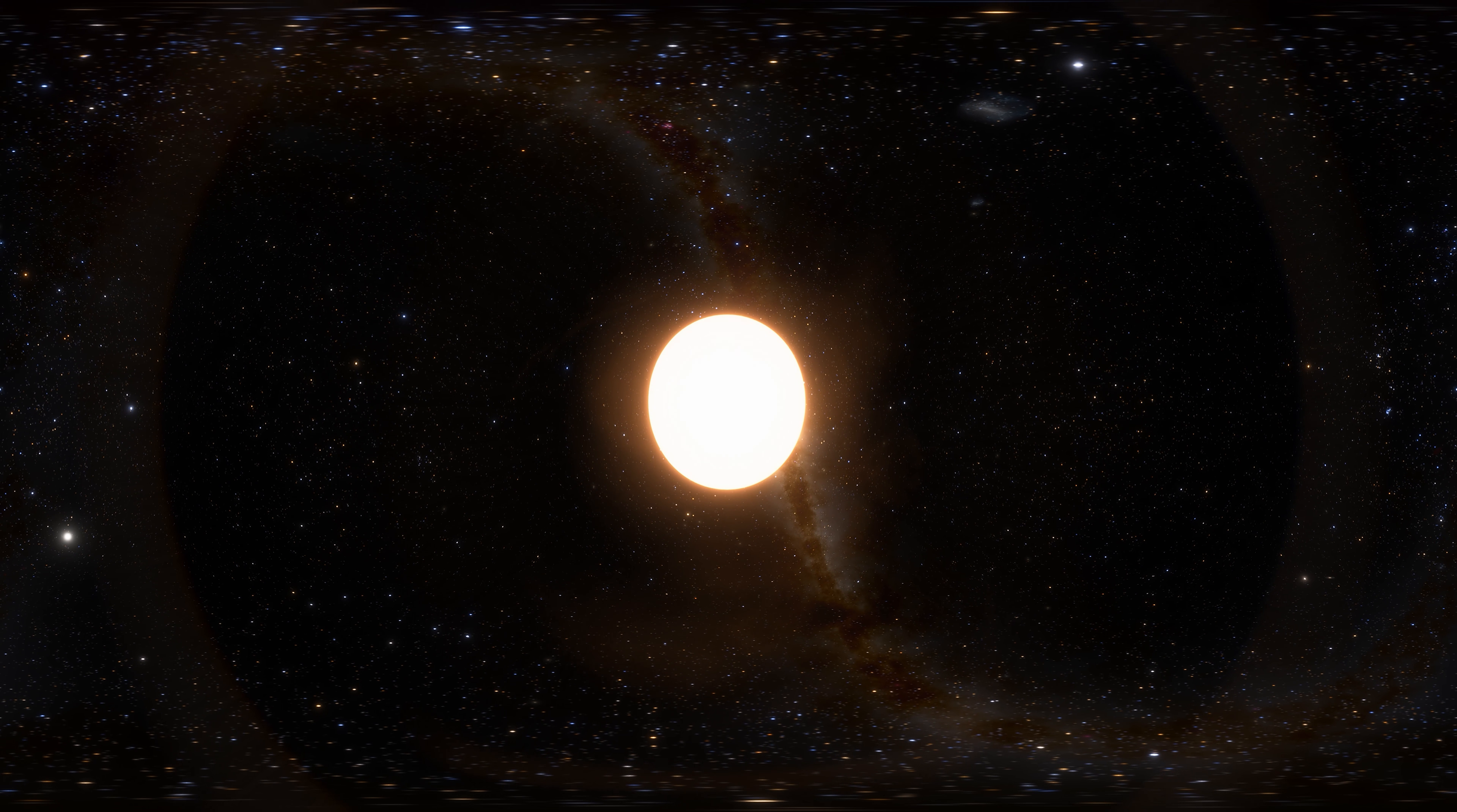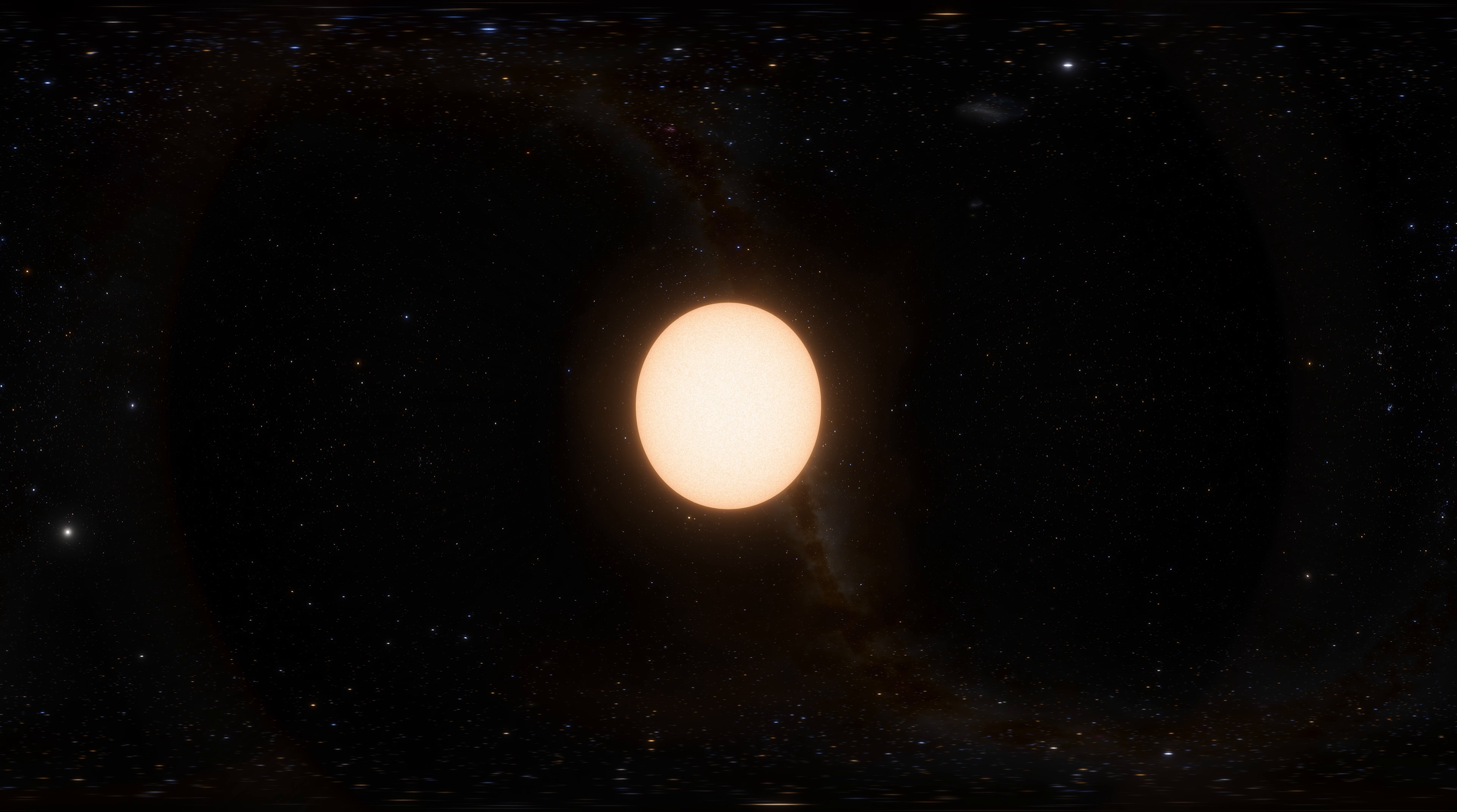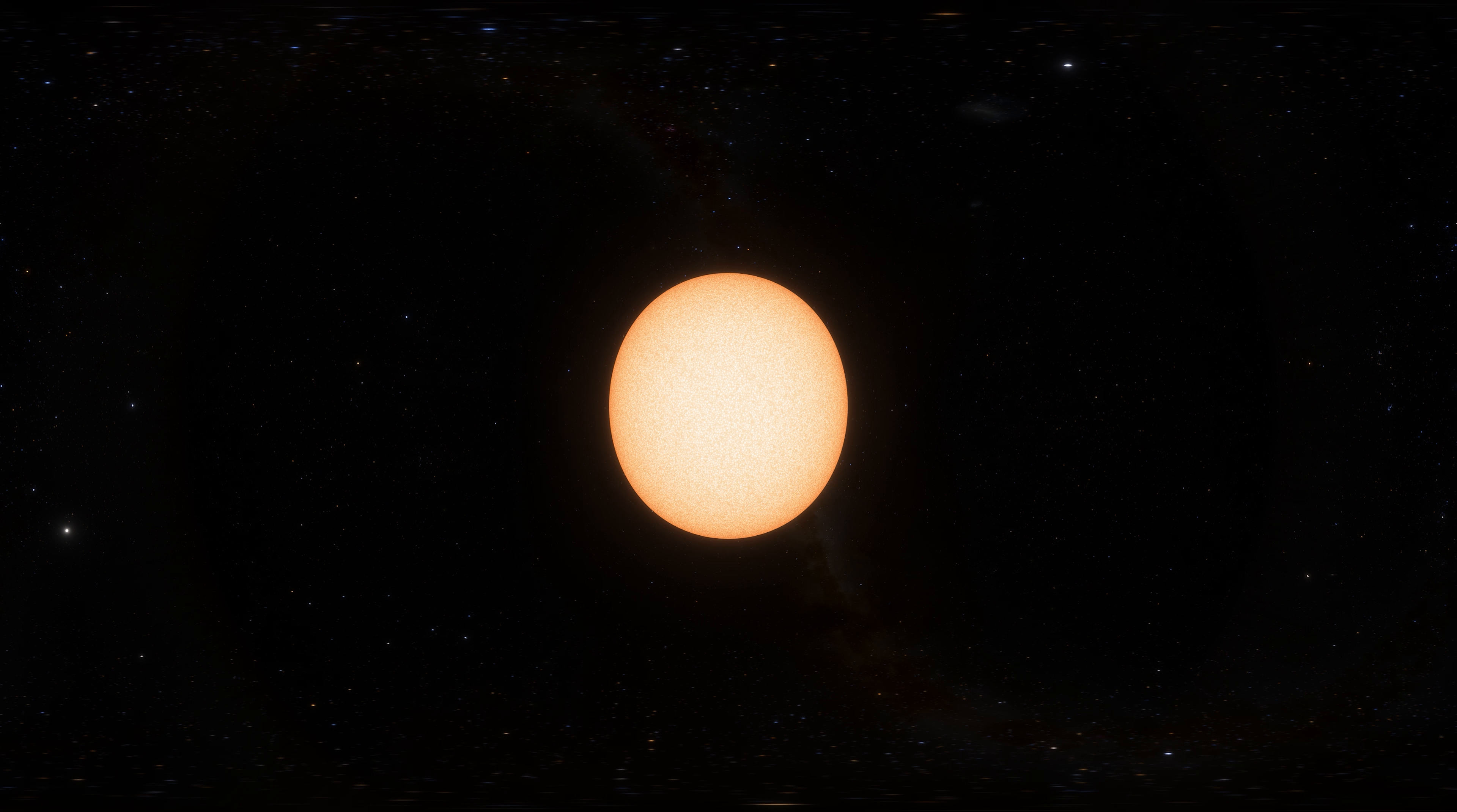There is a planet that is circling Pollux, called Thestias. This planet was discovered in 2006 and it is a gas giant which circulates Pollux at a distance of 1 astronomical unit.